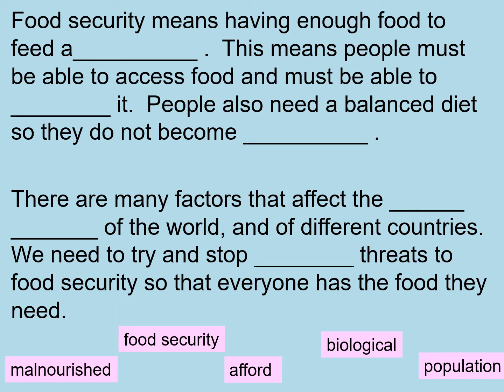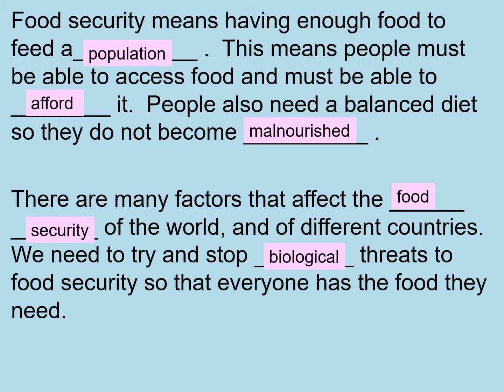Get these key notes down. Food security means having enough food to feed a population — this means people must be able to access food and must be able to afford it. People also need a balanced diet so they do not become malnourished. There are many factors that affect the food security of the world and of different countries, and we need to try and stop biological threats to food security.